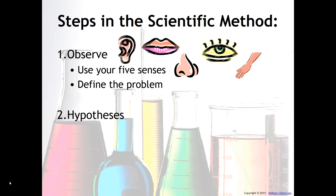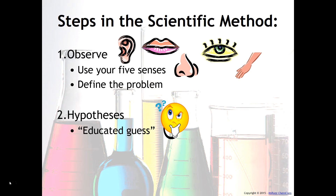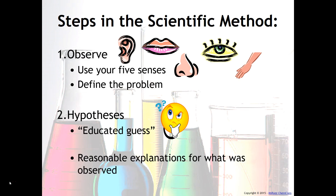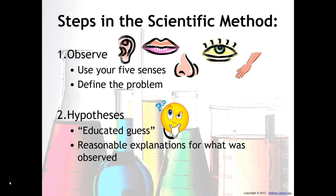Our second step is hypotheses. Notice that I wrote hypotheses and not hypothesis, because hypotheses really aim to help us come up with an explanation for what is going on — and usually we don't just have one of them. This is what we know as an educated guess: reasonable explanations that we propose for what is being observed.